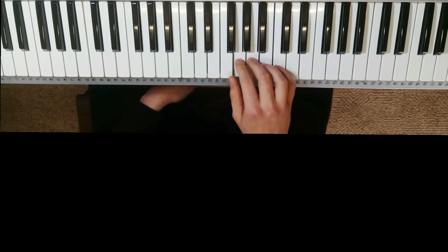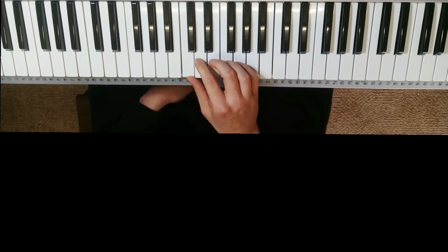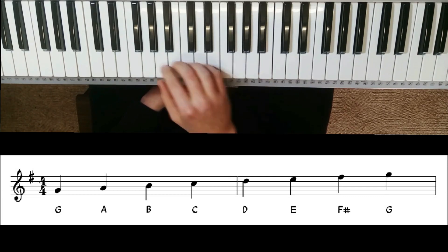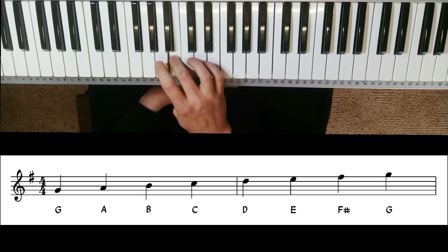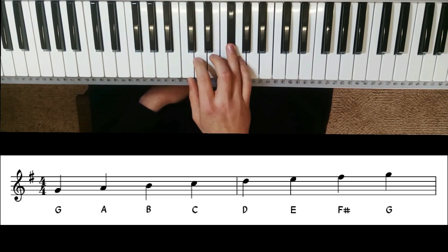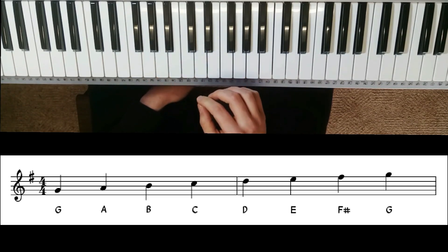The key of G major is different—we now have a black note, F sharp. It's the same concept: G, A, B, C, D, E, but when we get to F, we're playing F sharp instead. We need to keep this in mind for all of our chords as well.